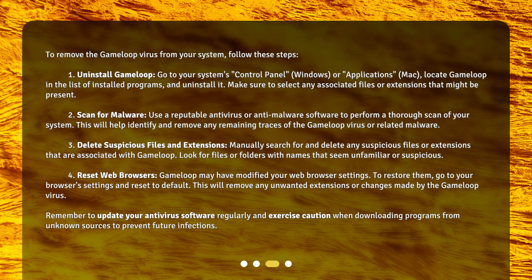Third, delete suspicious files and extensions. Manually search for and delete any suspicious files or extensions that are associated with GameLoop. Look for files or folders with names that seem unfamiliar or suspicious.